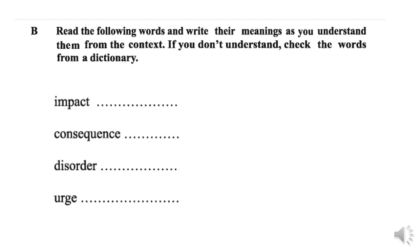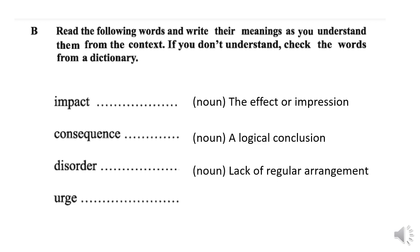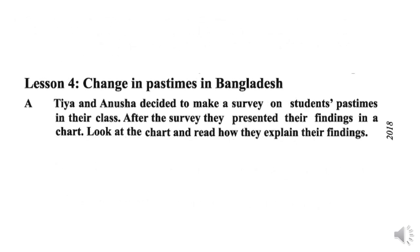We have a few more words. The fifth one is impact — it's a noun and it means the effect or impression. The sixth one is consequence — also a noun, it means a logical conclusion. The seventh one is disorder — a noun meaning lack of regular arrangement. And the last one is urge — it's a verb and it means to make an earnest request. So, we have completed Lesson 3.